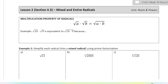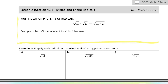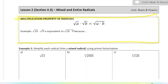Before we start, we want to review something called the multiplication property of radicals. There's a special property: if we are multiplying two separate radicals together — they can have totally different numbers underneath the square root symbol — we can actually combine those together under one square root symbol. So you can notice here we have square root of a times b. This does not work for adding or subtracting; it only works for multiplying.